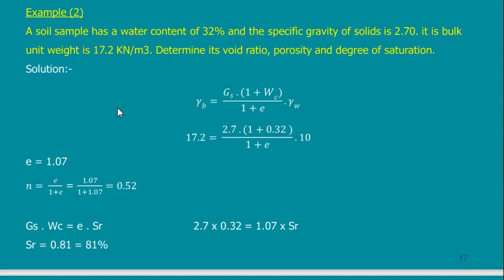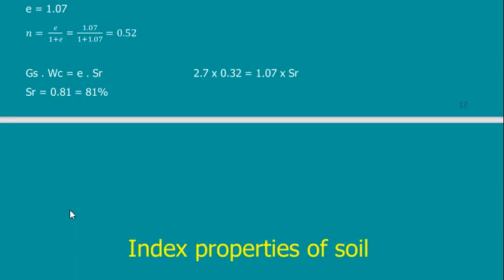Here is a problem of a different type: a soil sample has a given water content, a given specific gravity, and a given bulk unit weight. Determine its void ratio, porosity, and degree of saturation. You have some known parameters and need to find others. Choose the equation where you have everything except E, solve for E, then use another equation to get n, then reach Sr. Knowing some parameters, you can reach all other parameters easily if you know the equations.